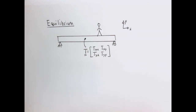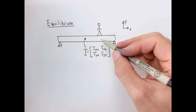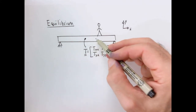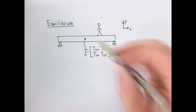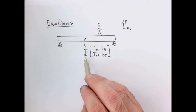In this video, we're going to consider equilibrium — by equilibrium, I don't mean anything more than the sum of forces and moments being zero. Let's consider a structure here: just a beam with a person standing on it. What we want to do is go to every single point in space and describe the stress tensor at that point.